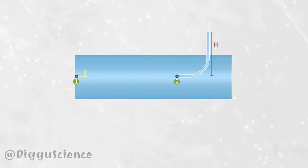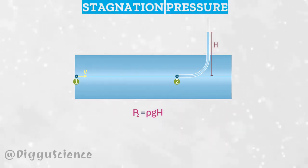Thus, the pressure value at point 2 is P2 equal to rho GH. Well, this pressure value is known as stagnation pressure.